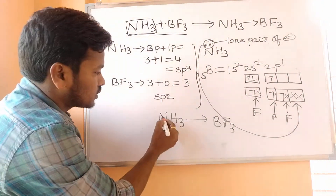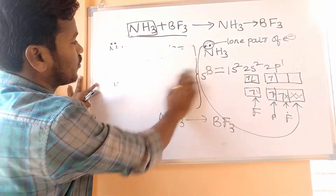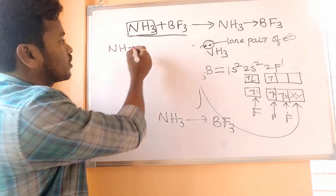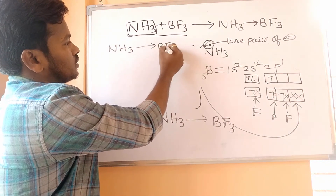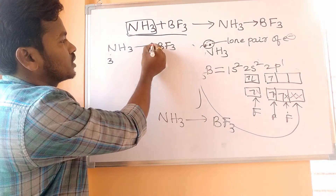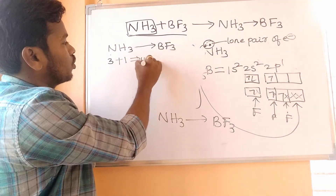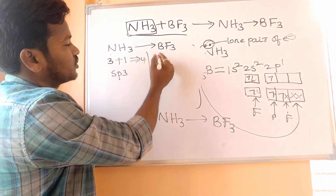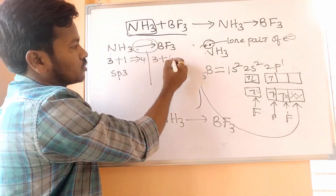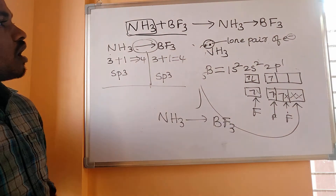Now we have to find out the hybridization of NH3·BF3 after the dative bond forms. In the adduct, NH3 has no remaining lone pairs. BF3 has three bond pairs, and one new bond is formed — the coordination covalent bond or dative bond. Three plus one equals four, so the hybridization becomes sp3. Both NH3 and BF3 portions show sp3 hybridization in the adduct.